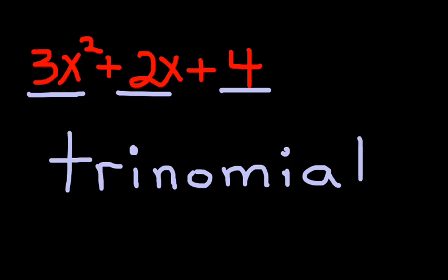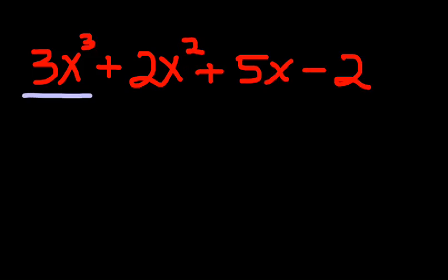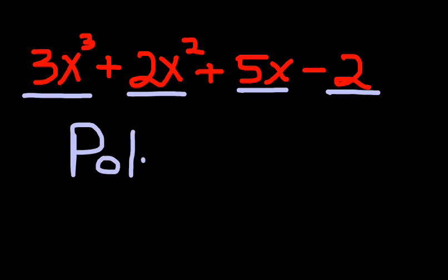Whenever you get another one on there, such as this one, one, two, three, four terms. When we get to four or more terms, we just go ahead and use the term polynomial. We just say this is a polynomial. Remember that means many terms. And it's just a polynomial in this case of four terms.